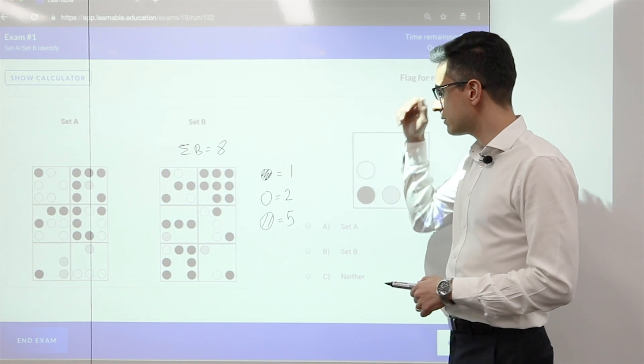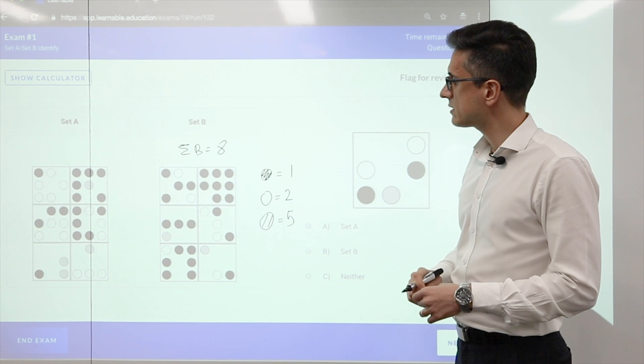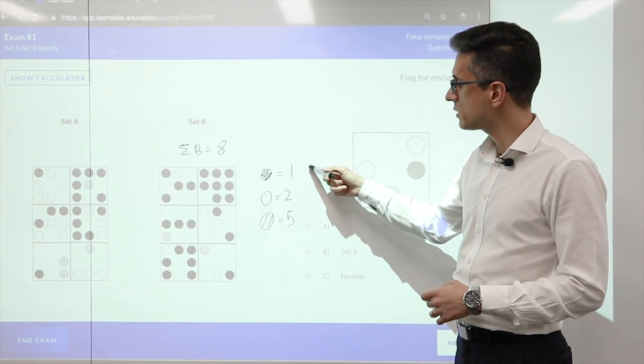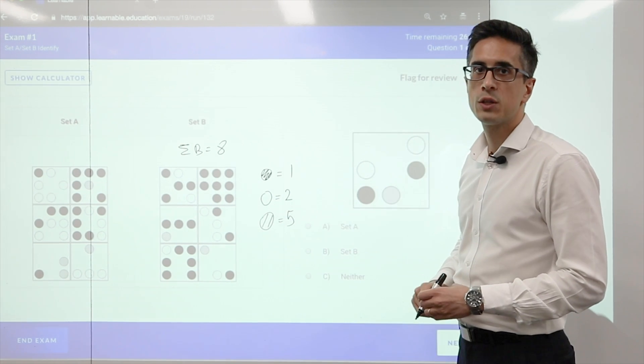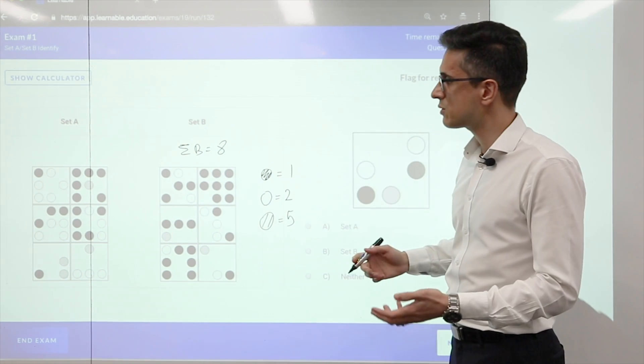Now that I have the rules for set B, I need to consider the rules for set A. The simplest case will be one in which the meaning of each shape is the same, and the only difference is the total. So let's try that and see what happens.